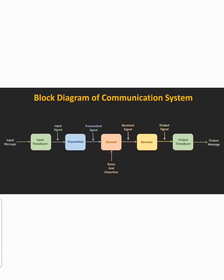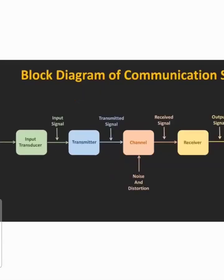Today we are going to discuss the block diagram of a communication system. In a communication system, there are five major blocks: first is input transducer, second is transmitter, third is channel, fourth is receiver, and last one is output transducer.